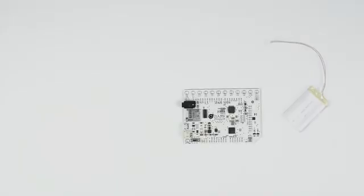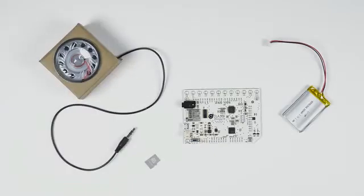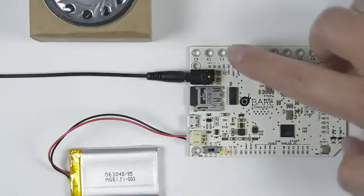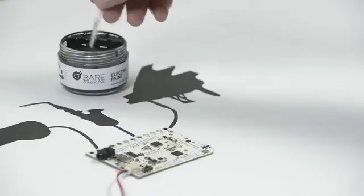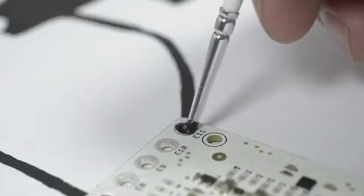To get started, all that you need is a battery, a speaker, an SD card, and a touch board. Connect a bit of our electric paint to the board and you'll have an instrument.